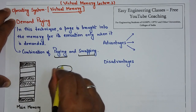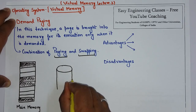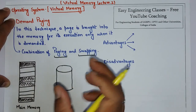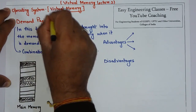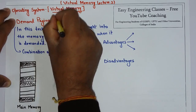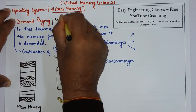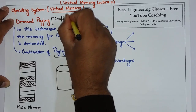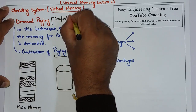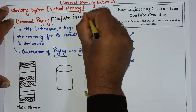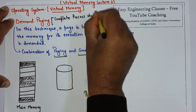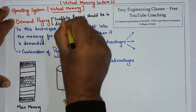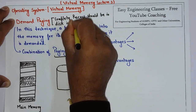The process remains in the secondary storage area — which is the disk — in the form of pages. The only requirement of demand paging, or virtual memory, is that the complete process should be present in the secondary storage area in the form of pages. So demand paging requires the complete process to be on disk or secondary storage in the form of pages.